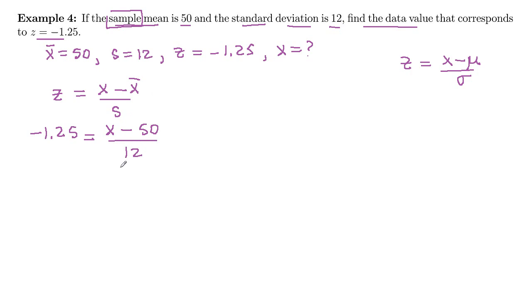Now we want to solve this equation for x. We will multiply both sides by 12. And these will cancel. We have 12 times negative 1.25 on the left-hand side, which is negative 15.